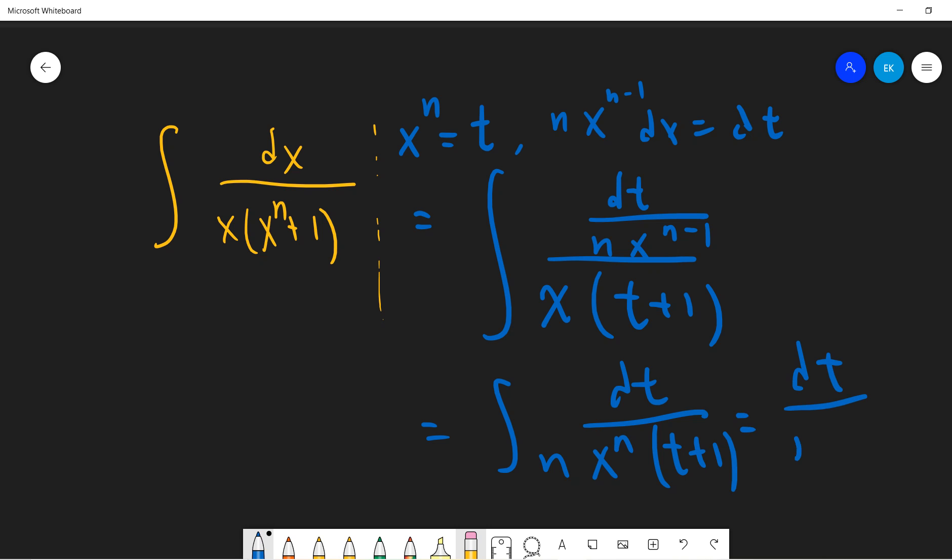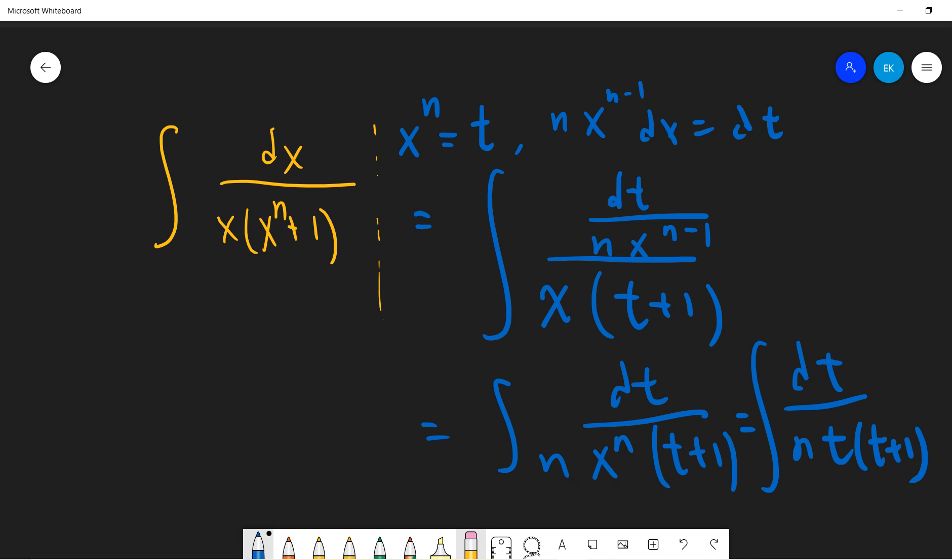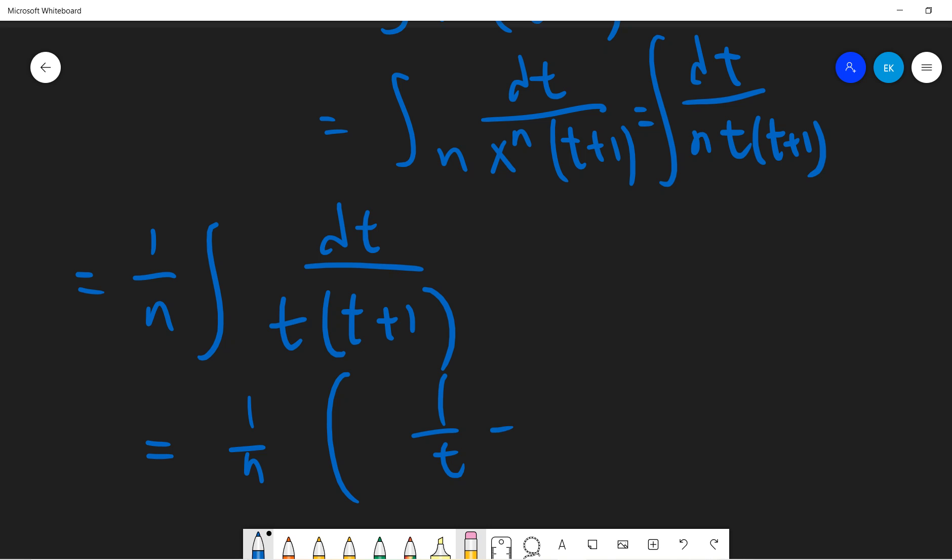So it's dt over t times t plus 1. Okay, so it's 1 over n, dt over t times t plus 1. Okay, so one can just write it as t minus 1 over t plus 1, right? And then dt.